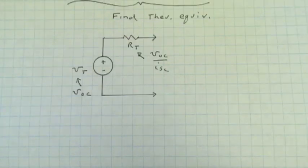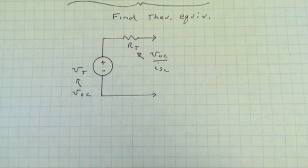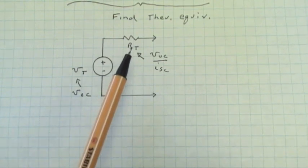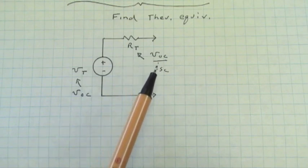And then use that information to say that the Thevenin equivalent voltage source is V open circuit. The Thevenin equivalent resistance is the ratio of the open circuit voltage to the short circuit current.